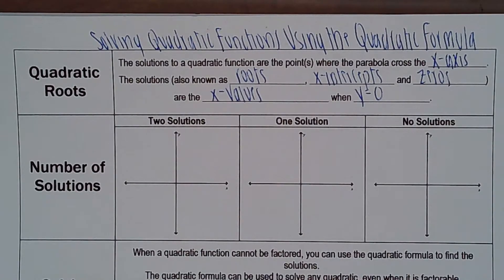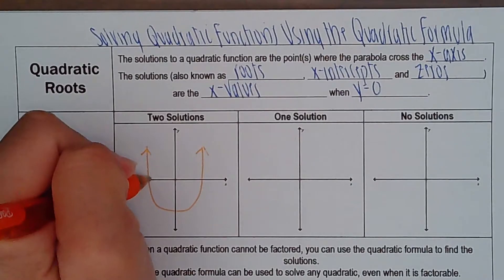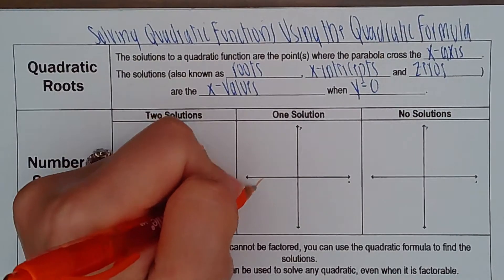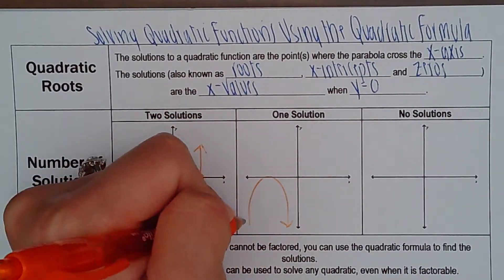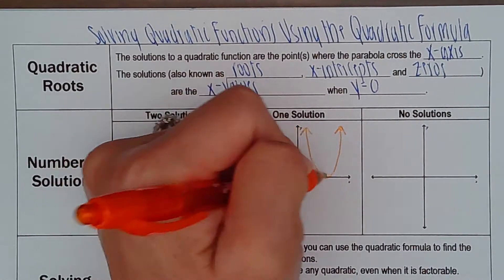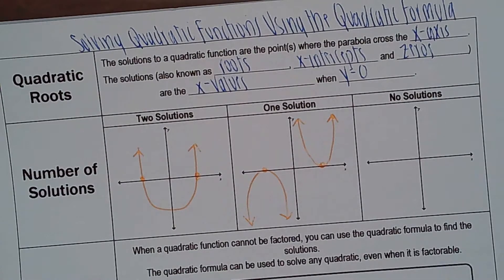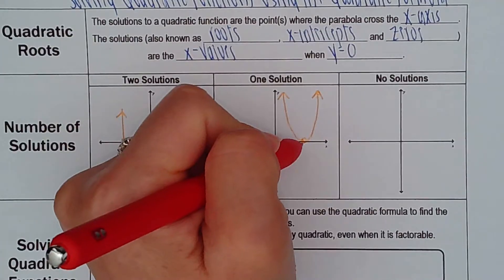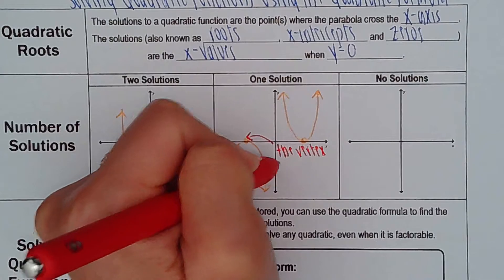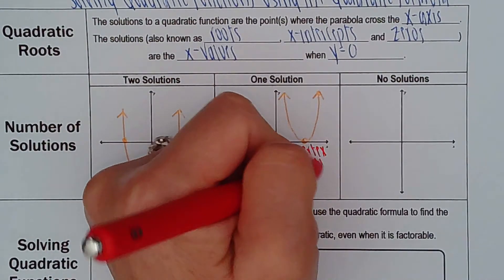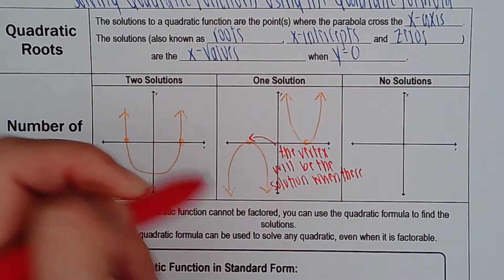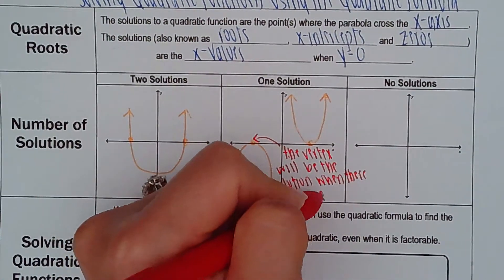Two solutions looks like this — it's a U shape, it can either go up or down, and it crosses the x-axis in two places. One solution looks like this. Again, it can go up or down, and the vertex will be the solution when there's only one solution.